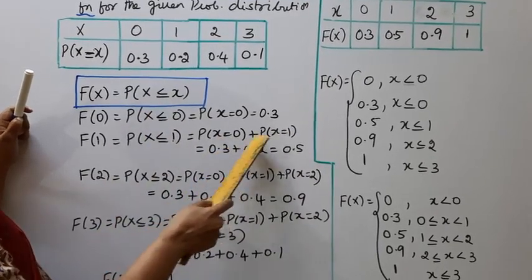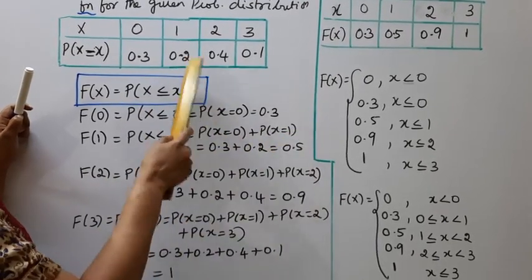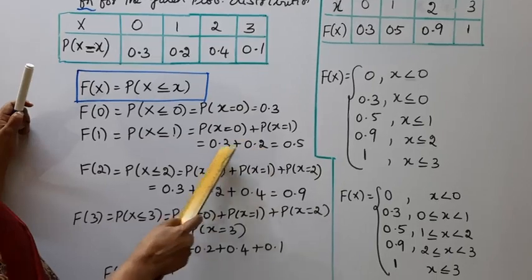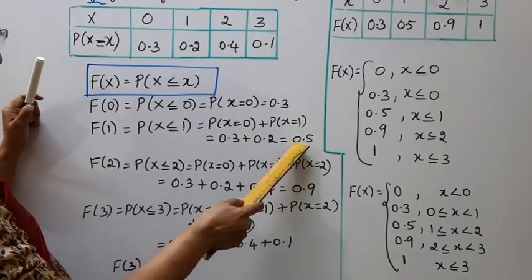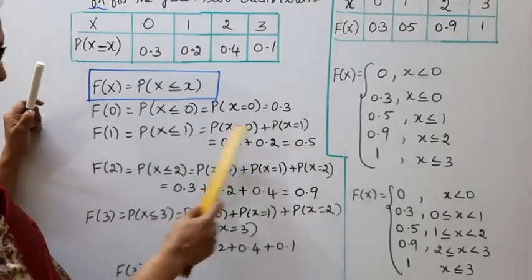P(X = 0) is 0.3. P(X = 1) is 0.2. So F(1) = P(X ≤ 1) = 0.3 plus 0.2 equals 0.5.